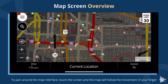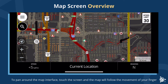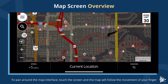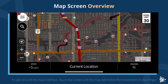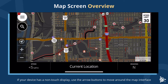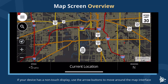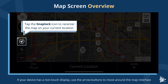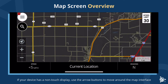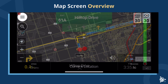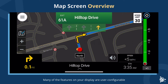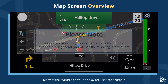To pan around the map interface, touch the screen and the map will follow the movement of your finger. If your device has a non-touch display, use the arrow buttons to move around the map interface. Tap the snap lock icon to re-center the map on your current location.